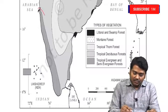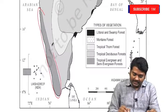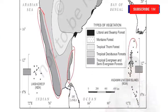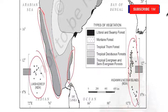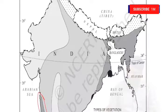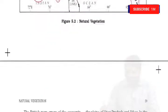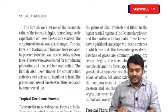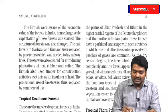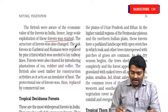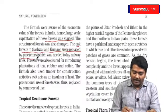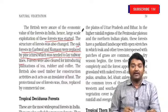Semi-evergreen forests are present in the Western Ghats, Tamil Nadu which receives rainfall, Andaman and Nicobar, and Lakshadweep. Northeast India also receives heavy rainfall and supports these forests. The British were aware of the economic value of these forests, and hence large-scale exploitation of these forests was started.